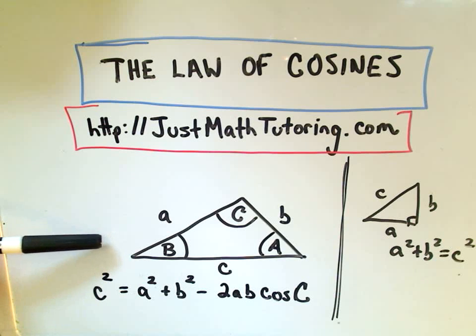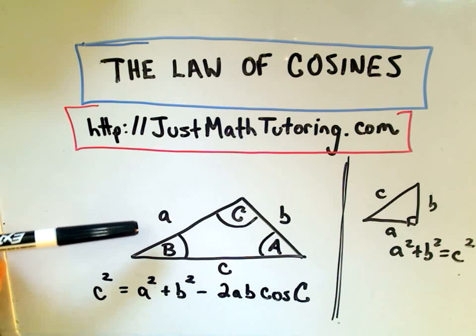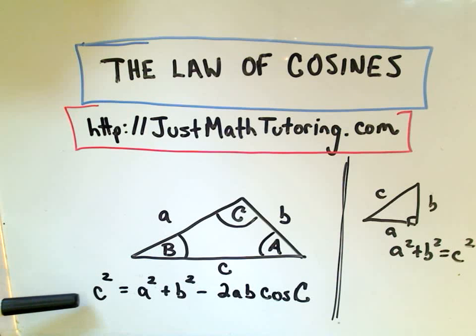The Law of Cosines is just a generalization. It relates the sides of a triangle, no matter what type of triangle it is. Here's the formula at the bottom: if you want to find one of the sides, say C, we use the formula C squared equals A squared plus B squared minus 2AB cosine C.